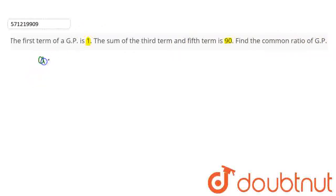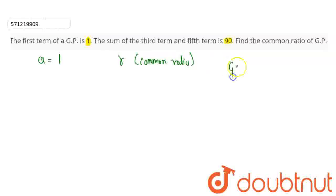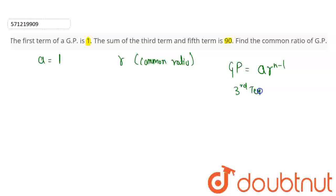Let the first term be A, which is given as 1, and let R be the common ratio. As you know, the general term of a GP is given by A·R^(n−1). So the third term will be A·R^(3−1), which gives A·R².